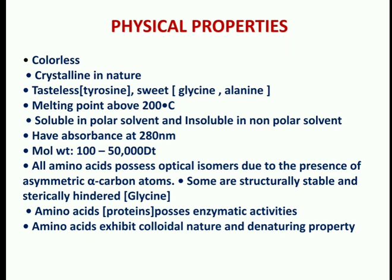Physical properties of amino acids: amino acids are colorless and crystalline in nature. Some are sweet, like glycine and alanine. The melting point is about 200°C. They are soluble in polar solvents and insoluble in non-polar solvents. They have absorbance at 280 nm. Molecular weight ranges from 100 to 50,000 daltons. All amino acids possess optical isomers due to the presence of asymmetrical alpha carbon atoms, and amino acids also possess enzymatic activities and denaturing properties.